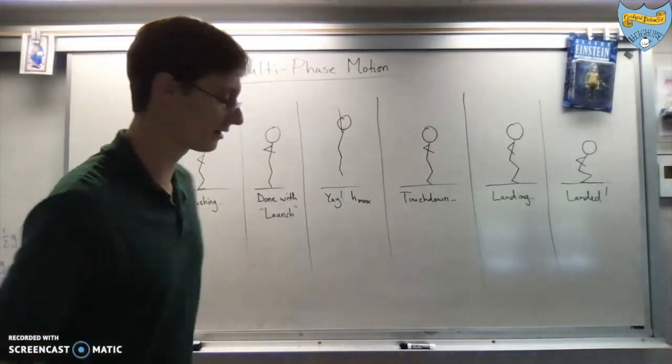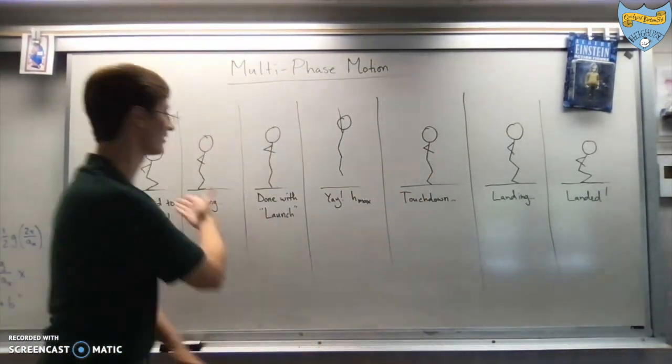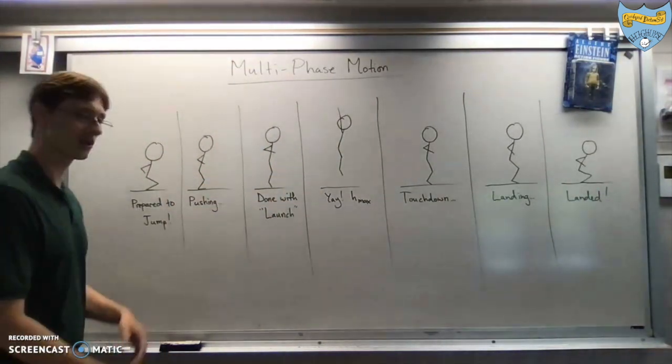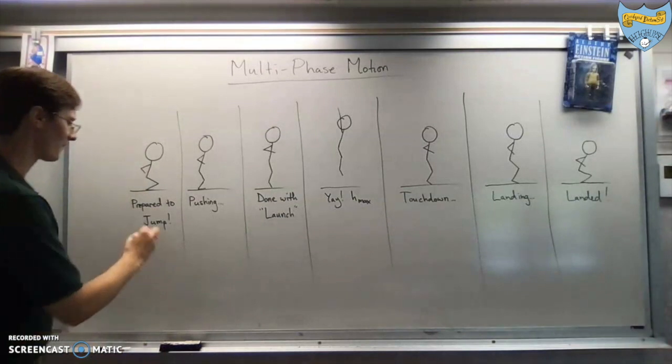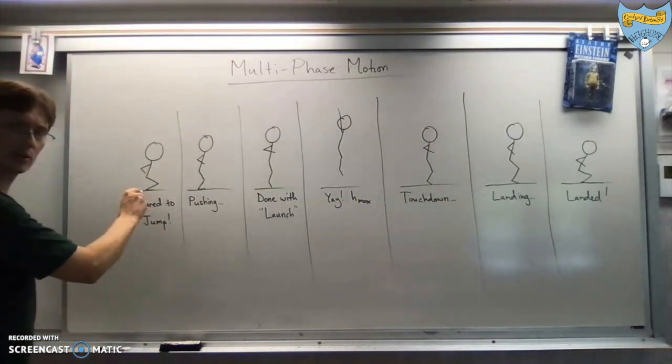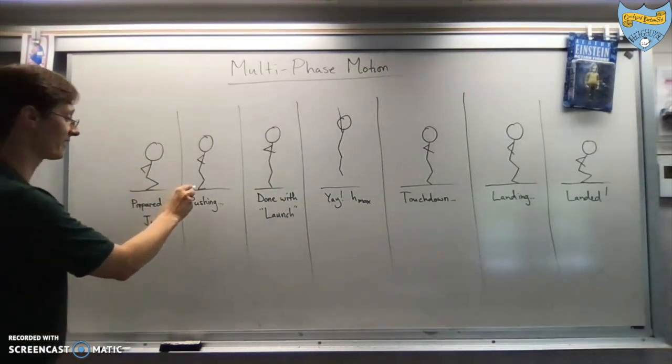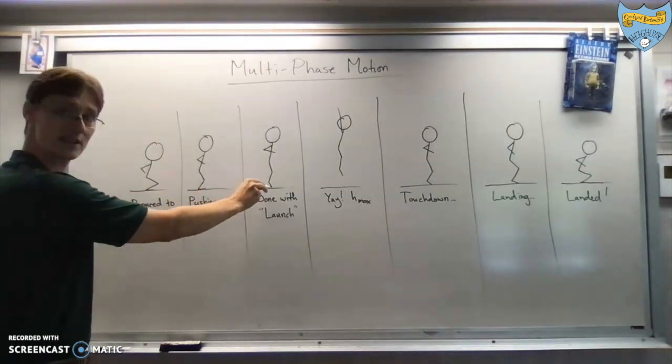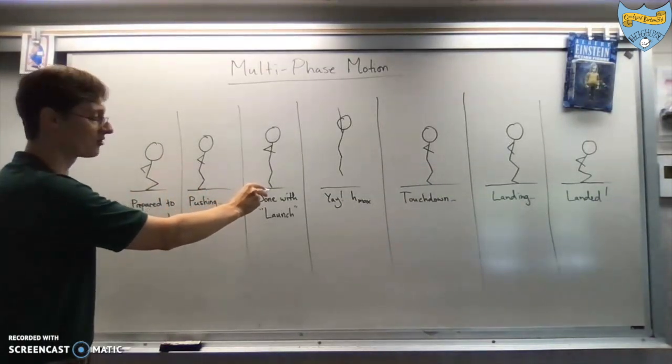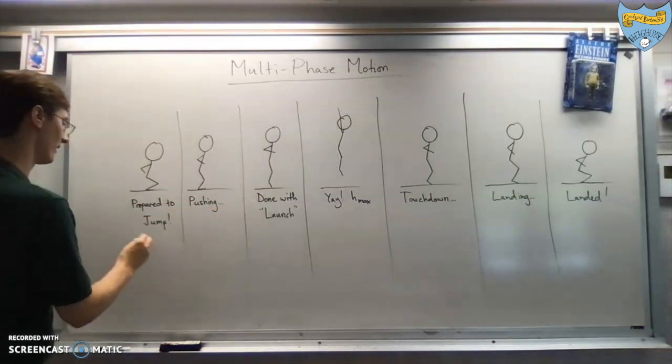The stereotypical example that I will use for multi-phase motion is the jumping guy. All right, so if you're jumping, pushing off the ground, during this part where you are lowest, and this part where you're still touching the ground all the way up until this moment where your feet have just barely left the ground.